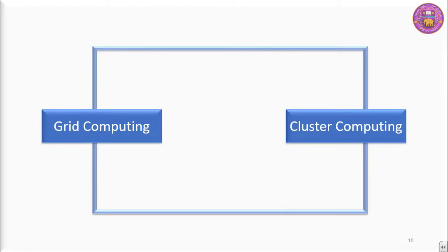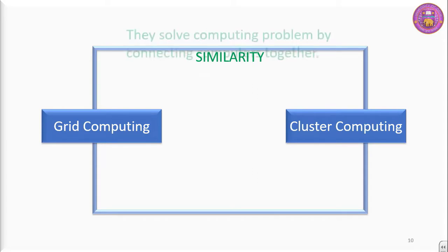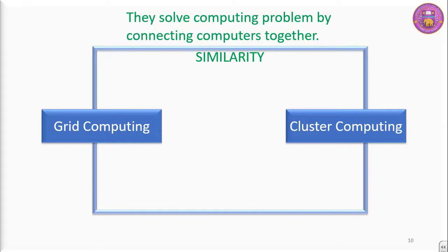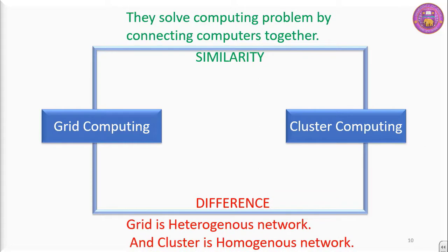Now let us look at the similarities and differences between grid computing and cluster computing. The similarity: both types of computing solve computing problems by connecting computers together. The biggest difference is that grid uses a heterogeneous network while cluster uses a homogeneous network. Heterogeneous network means it consists of different types of hardware and software, whereas in a cluster, all computers have the same type of hardware and software.